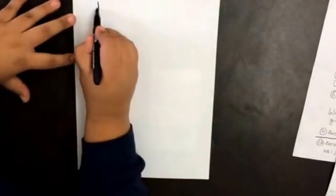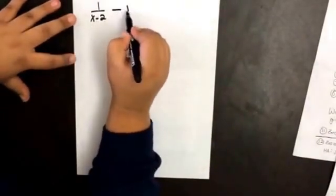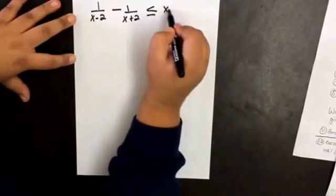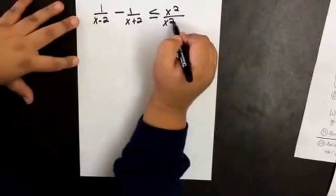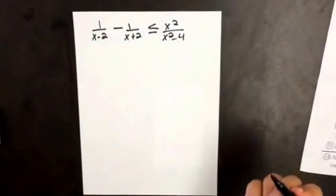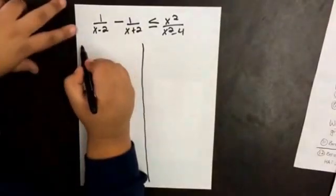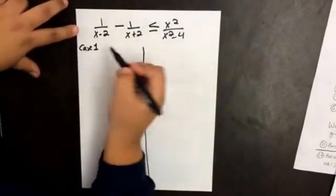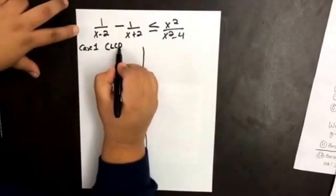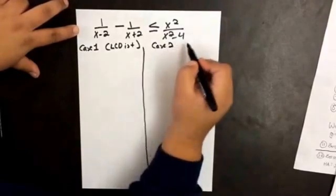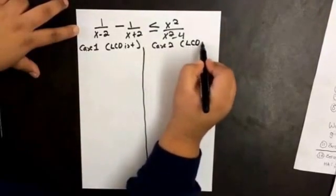Let's do another example. What if we have 1 over x minus 2 minus 1 over x plus 2, less than or equal to x squared over x squared minus 4? Once again, we're going to have two cases: case 1, the least common denominator is positive; case 2, the least common denominator is negative.